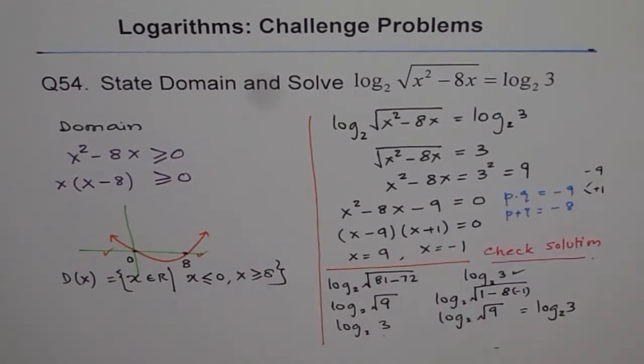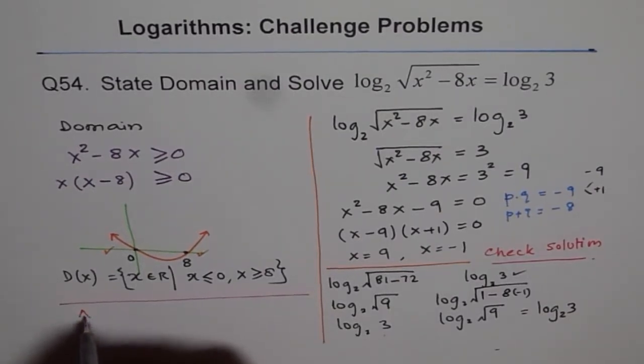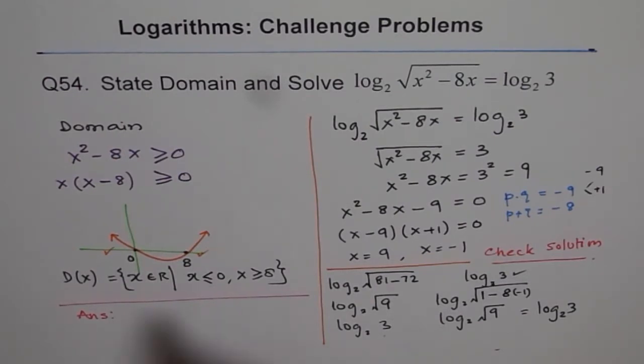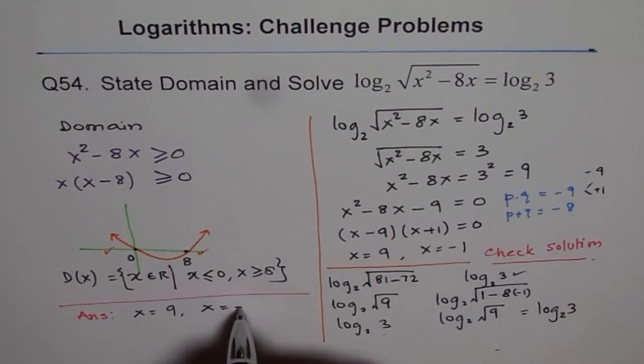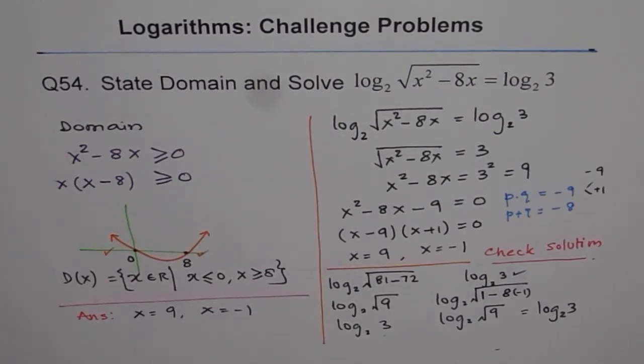So, we have both correct solutions, right? And therefore, we can write our answer as x equals 9 and x equals minus 1. So, this particular equation has two solutions, one is x equals 9 and the other is x equals minus 1, right? So, it's important here or in any logarithmic equation to check your answers, right? You may sometimes get answers which are not valid and those are called extraneous answers. Thank you.